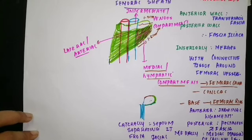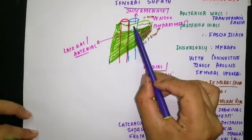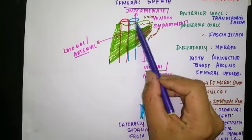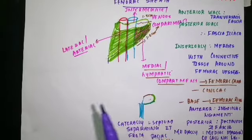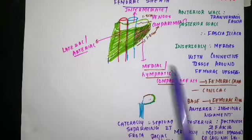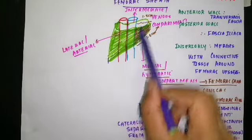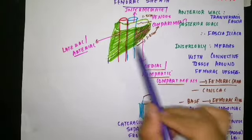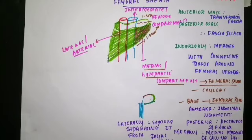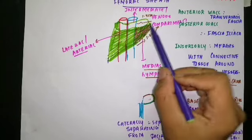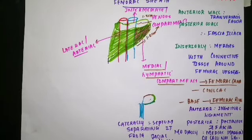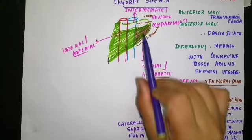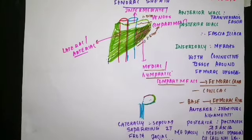These are the boundaries of the femoral ring, which is the base of the femoral canal. It is through this ring that a femoral hernia descends into the femoral canal. The boundaries of the femoral ring are clinically very important.